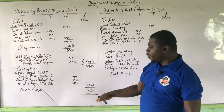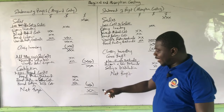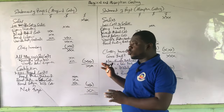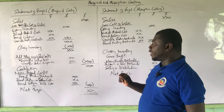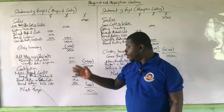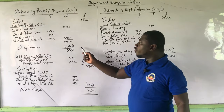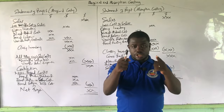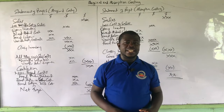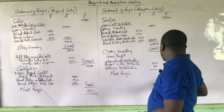The net profit for the absorption costing and the net profit for the marginal costing will not be the same — they will be different, even though you are going to use the same information to prepare both. The profit will be different because of the valuation of closing stock or closing inventory. That is what I need to hammer on in part two of this video. I'm going to take a question and solve it, and we are going to look at how to value the closing stock using the two methods, and also reconcile the two profits.